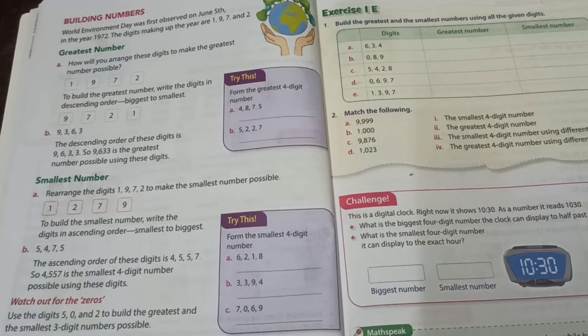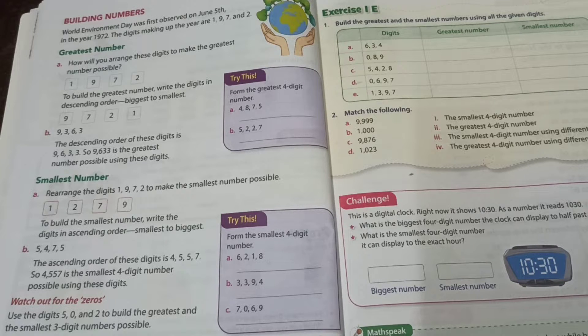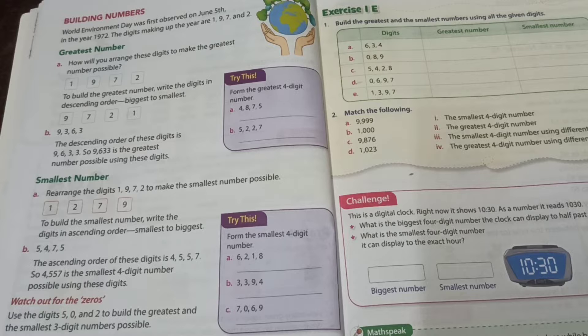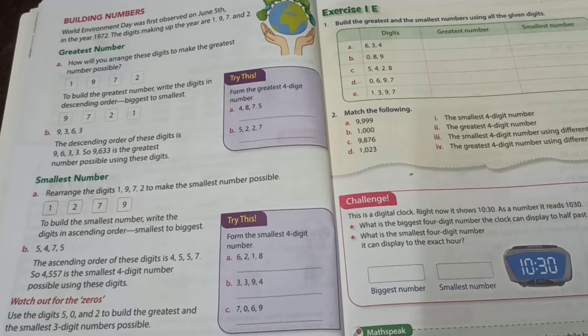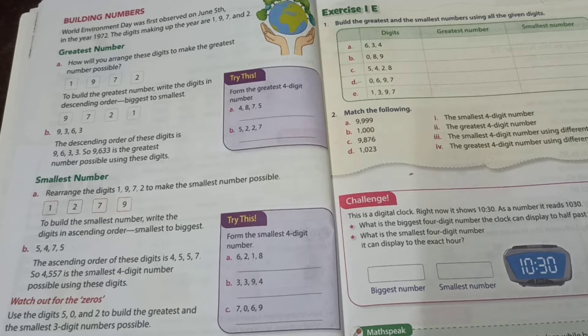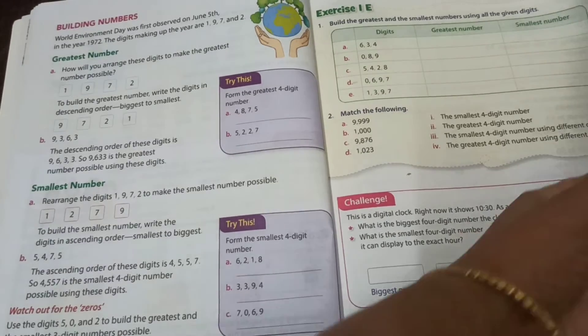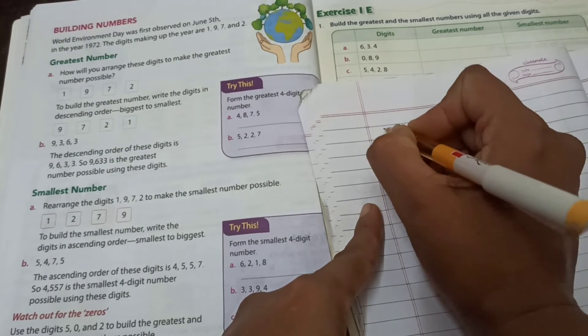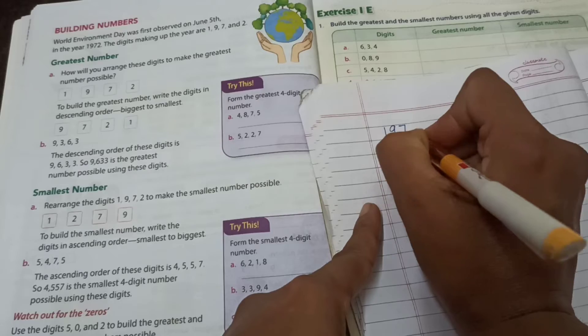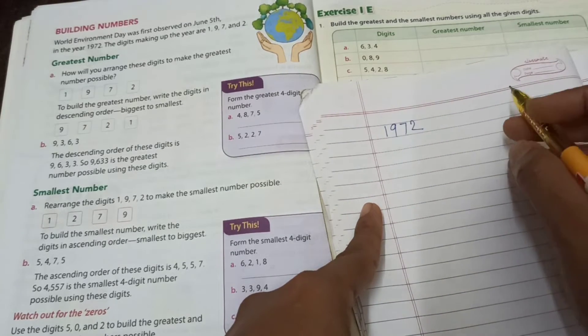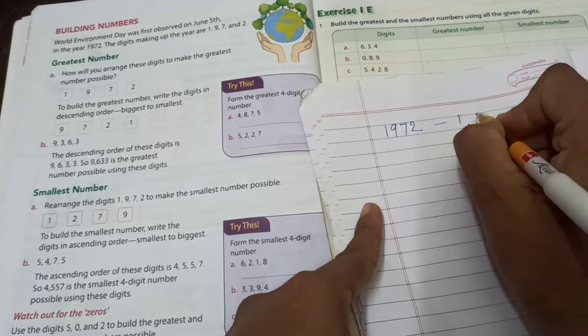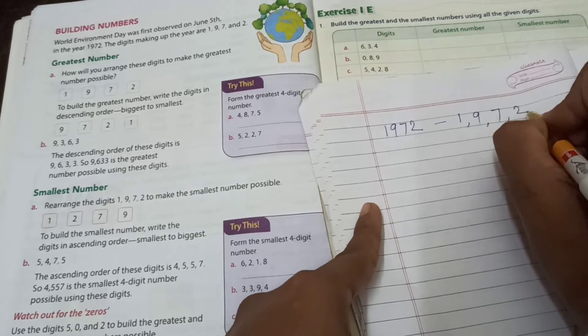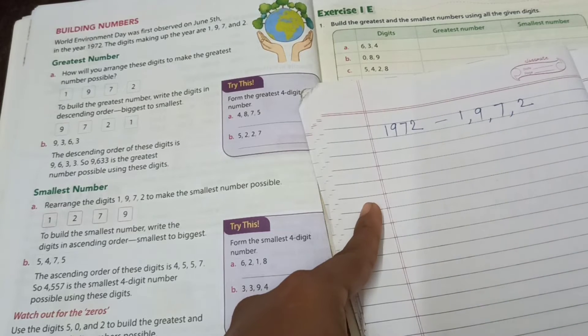World Environment Day was first observed on June 5th in the year 1972. Our textbook is saying the digits making of the year are 1, 9, 7 and 2. The digits 1, 9, 7, 2 are making 1972.